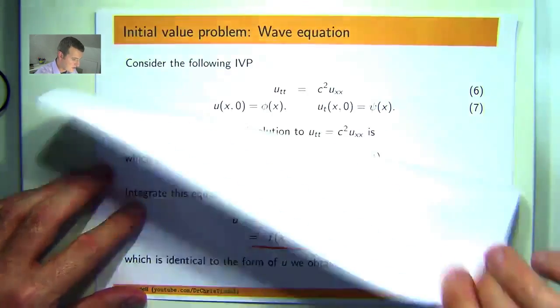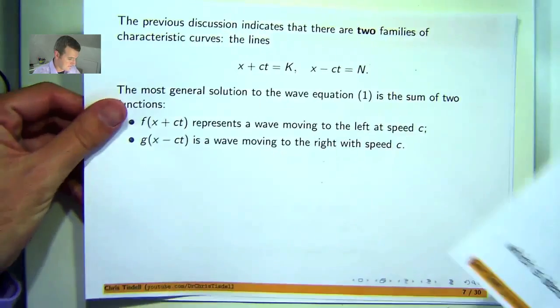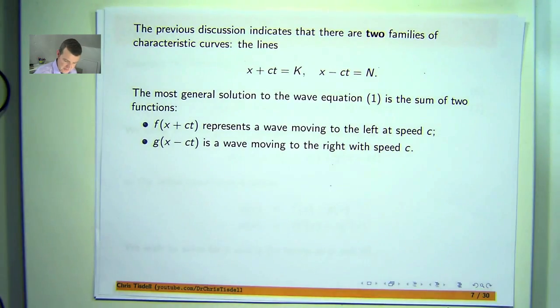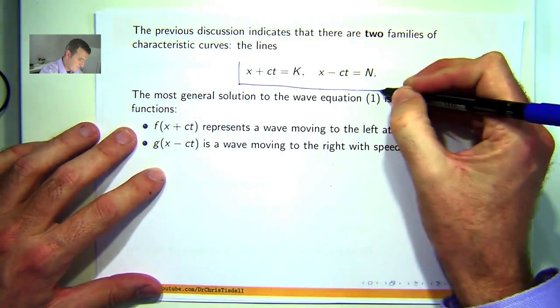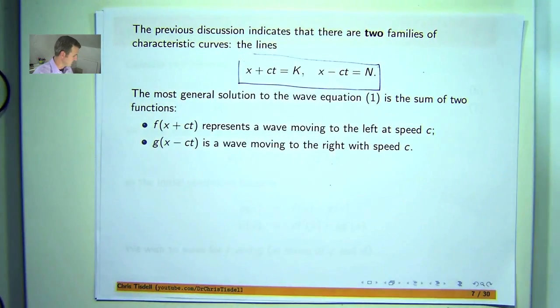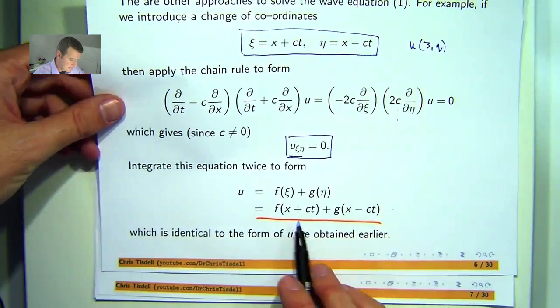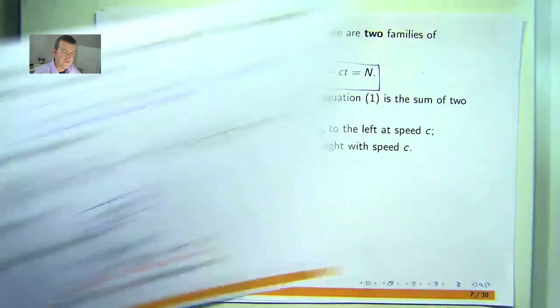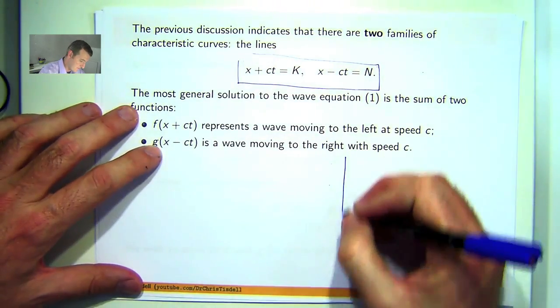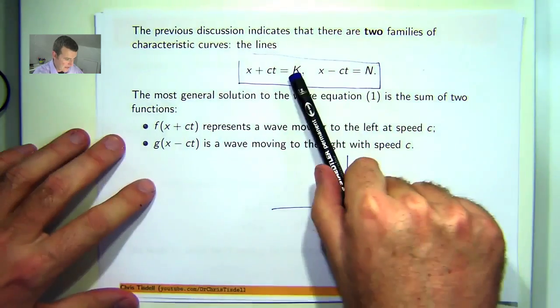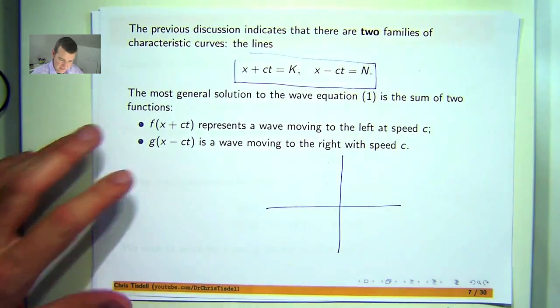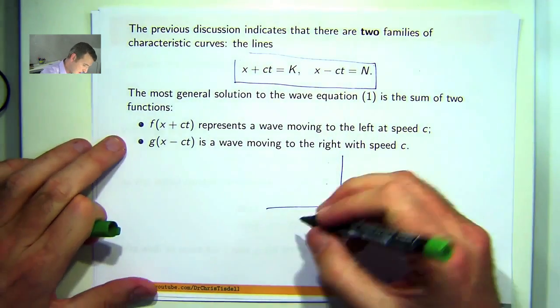We've already talked about these kinds of problems in another video. Now, just from the form of the solution to the wave equation, this suggests that there's two families of characteristic curves. So think of k as an arbitrary constant, n as arbitrary constant. You get these lines.